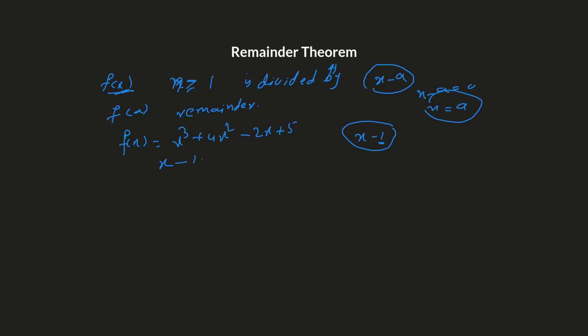So x minus 1 equals 0 and x equals positive 1. Now substitute 1 into the function — f of 1 would be the remainder according to the theorem. So it would be 1 cubed plus 4 times 1 squared minus 2 times 1 plus 5. That gives 1 plus 4 minus 2 plus 5, which equals 8. So 8 is the remainder when f of x is divided by x minus 1.